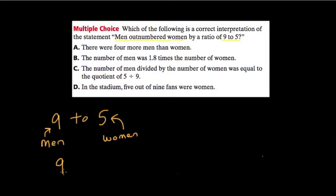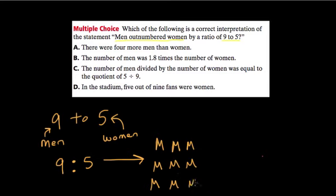So this ratio, usually written like this right here, means that if you have a group, within that group there are 1, 2, 3, 4... let me write like this: men. There are 9 men - 1, 2, 3, 4, 5, 6, 7, 8, 9 men.